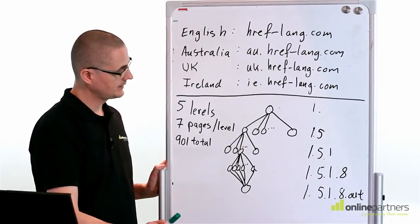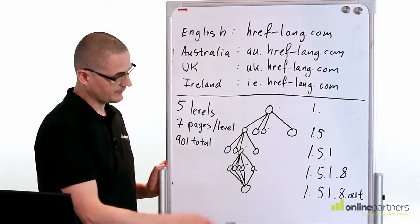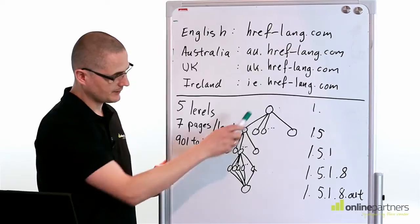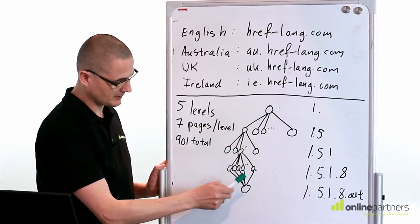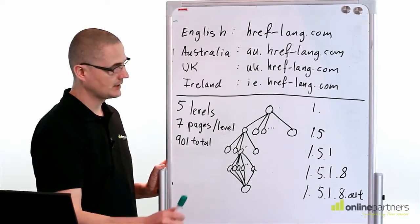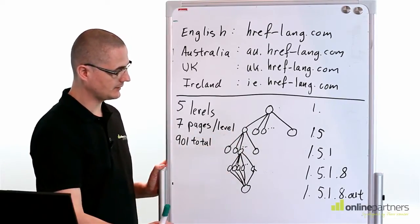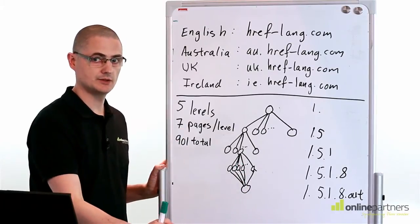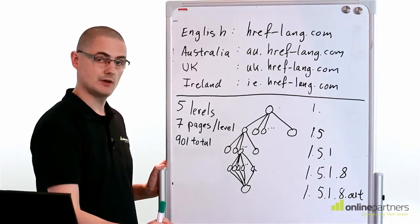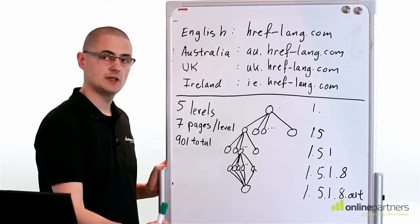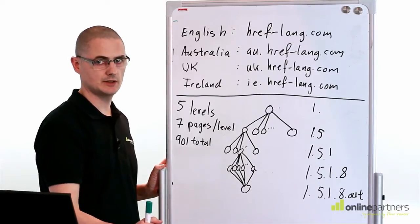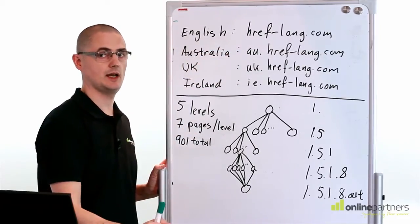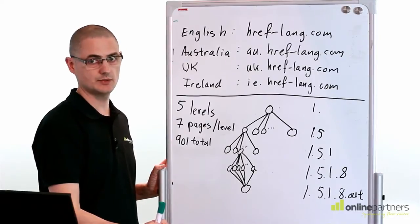Each of these test sites is built up in five levels. On each level, except for the front page and the bottom pages which are link-out pages, you have seven pages on each level. Each test site consists of a total of 901 pages. The content on each page is unique because it consists of gibberish English. But when you look at it cross-domain or subdomain, you have the problems with massive duplicate content.